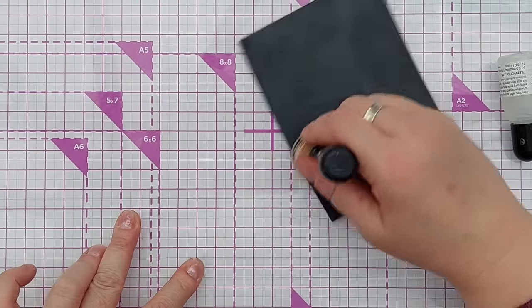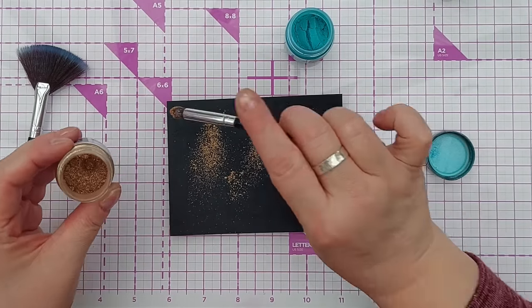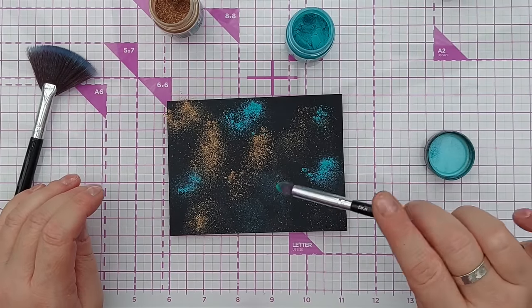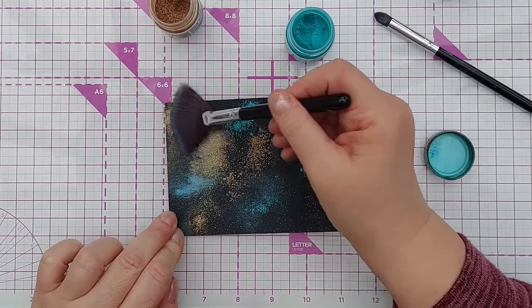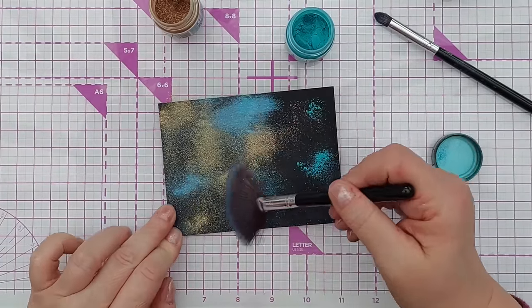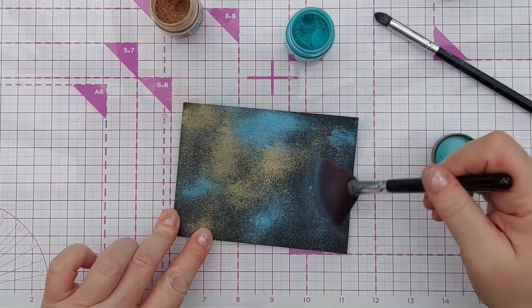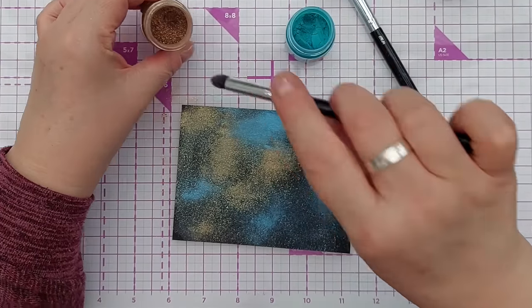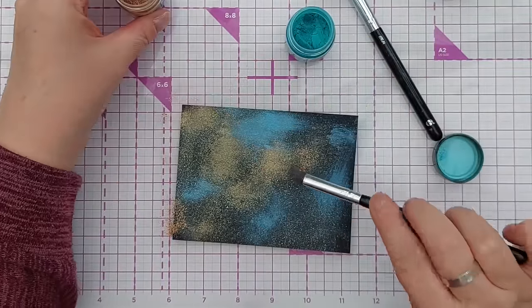And I'm going to take this is the Warm Wishes Luscious Powder and a teal Luscious Powder and just brush those over there to stick to the embossing ink. Get those spread out. And you can see how those have come alive on that black background.